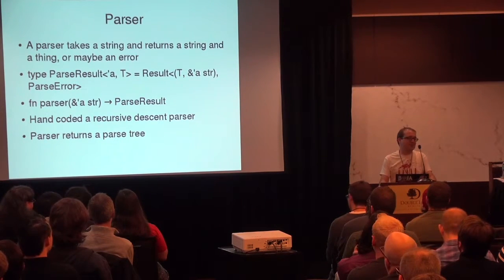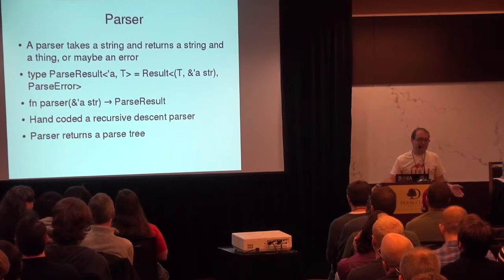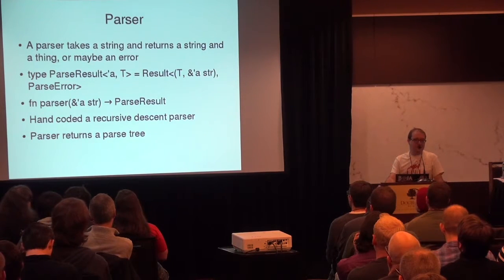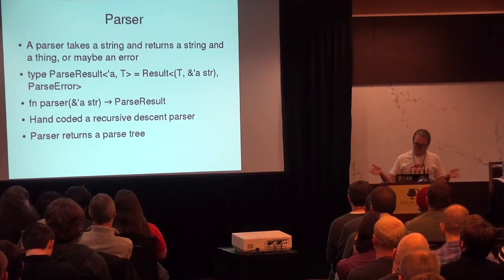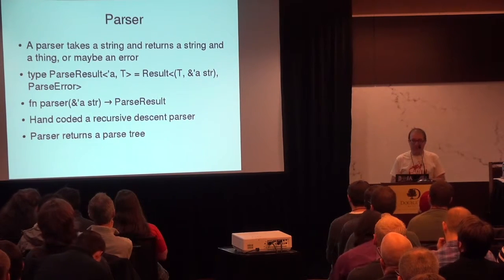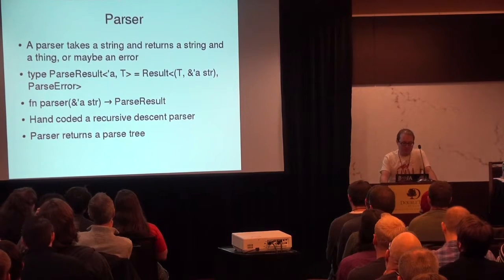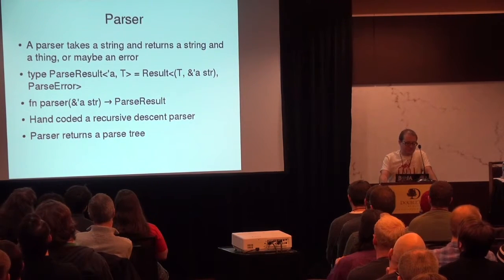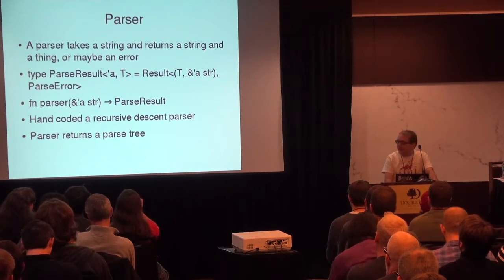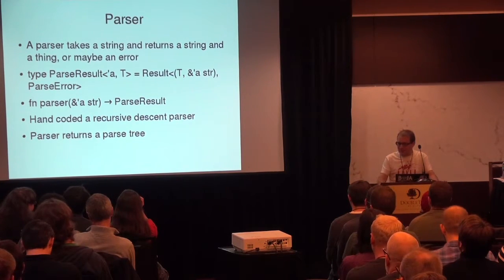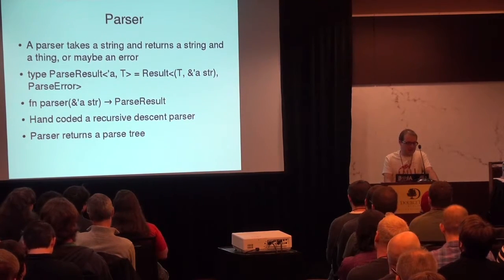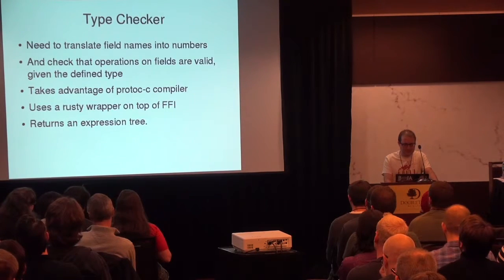You heard in the previous talk about awesome tools for building parsers — I just built my own. It ended up not being that complicated. It just reads through the string and either successfully matches it and returns a successful result and the remainder of the string it didn't parse, or it fails to parse and returns an error and you get a parse error. The parser reads the expression string and returns a parse tree, which gets fed into the next section: the type checker.